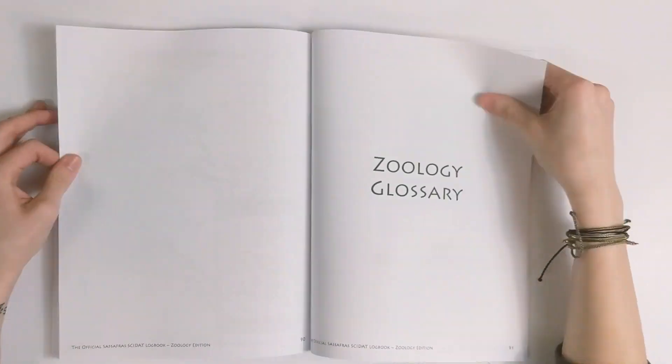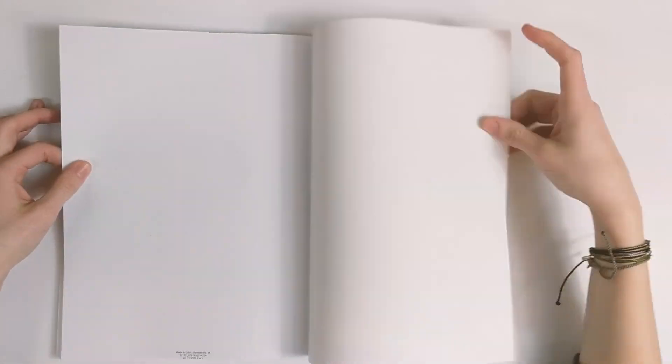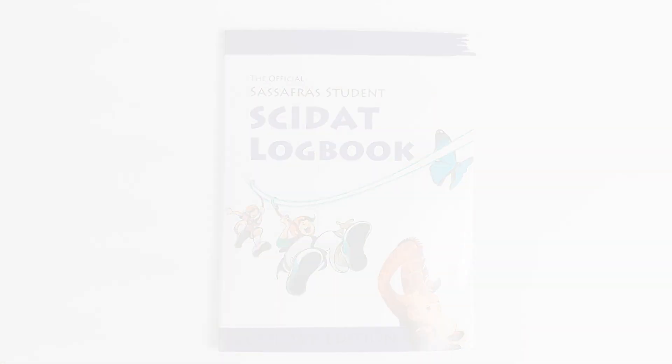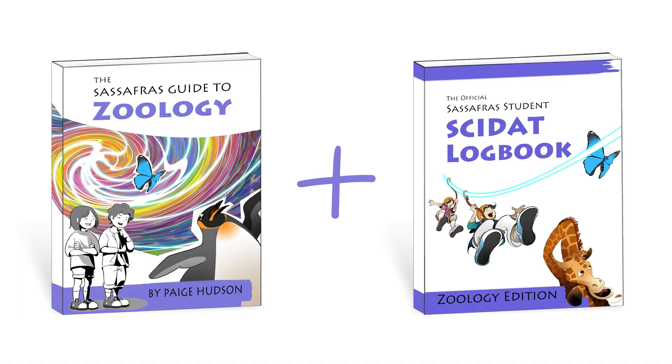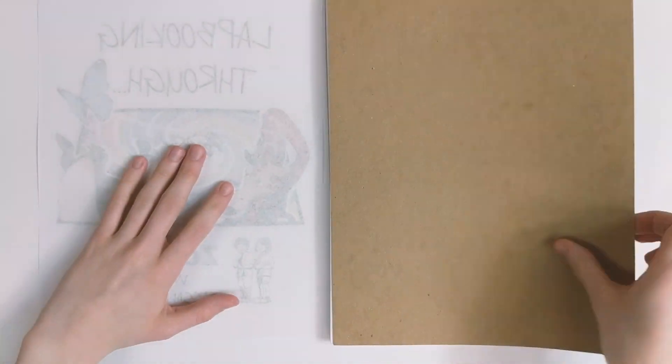At the very back of the logbook, you'll find the Zoology Glossary. The Activity Guide and the Logbook work together, or you can choose to use our Lap Booking Guide.